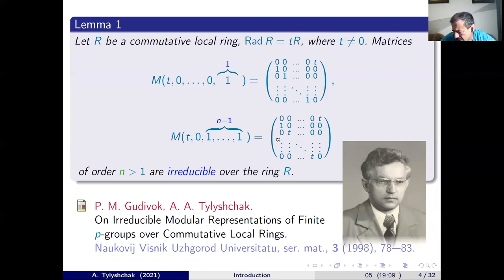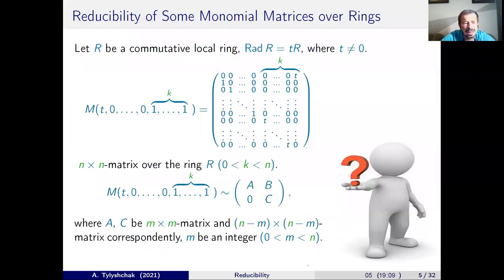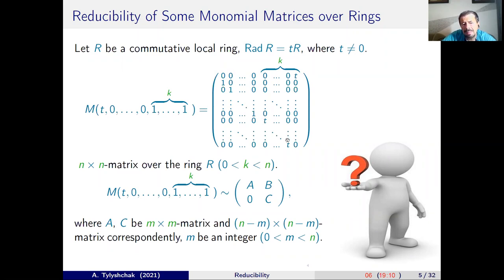To continue the investigation, we consider some general cases of matrices — specifically, matrices where in each row and each column there is only one non-zero element. Such a matrix is generally called a monomial matrix. Here we also indicate the positions of non-zero elements, and we assume there are an arbitrary number of elements T on these non-zero positions. The question is: when is such a matrix reducible and when is it irreducible?